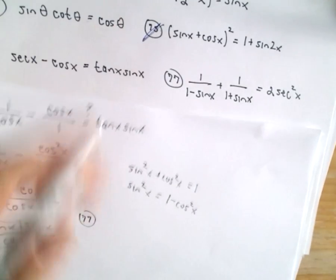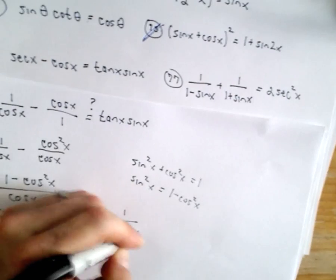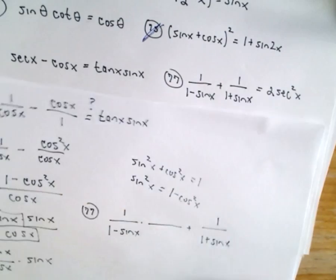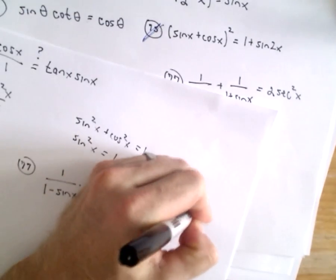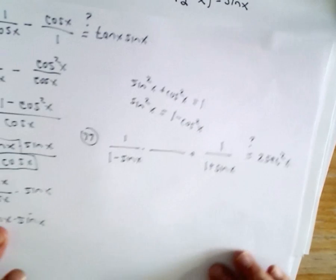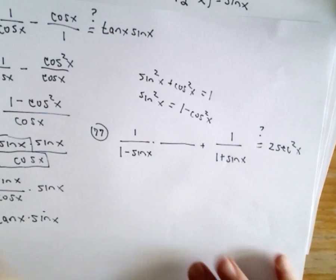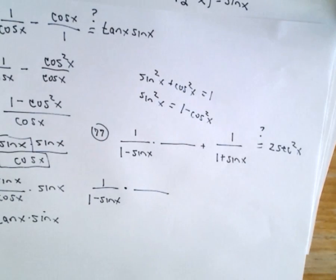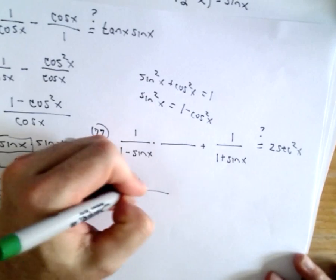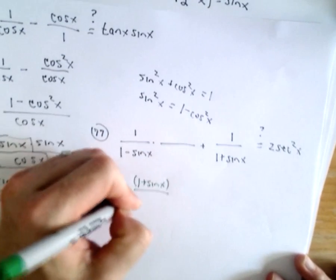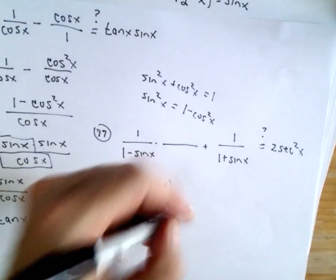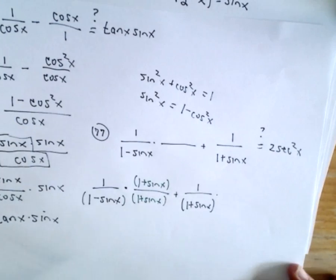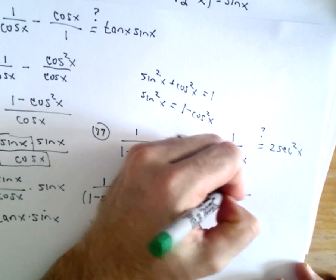Problem 77: We've got 1/(1-sin(x)) plus 1/(1+sin(x)). And again we're trying to show that we get 2 times sec²(x). Well in this case I'm going to get common denominators. So I'm going to have to multiply top and bottom of my first fraction by 1 + sin(x), and I'm going to put that in parentheses just to remind myself to distribute. Plus we've got 1/(1+sin(x)). We'll multiply top and bottom of that one by 1 - sin(x).